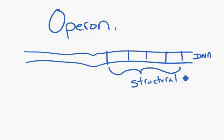Problem is, sometimes we don't need a structure built. We need to regulate its control. So often, just before this, you have an area called an operator gene.